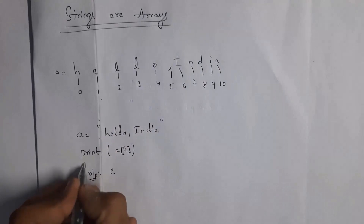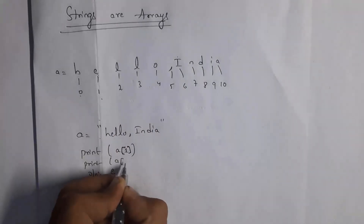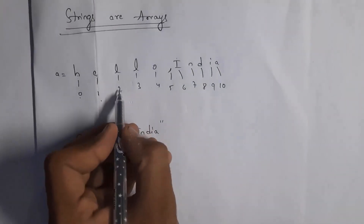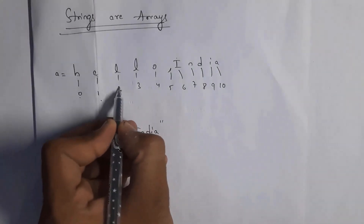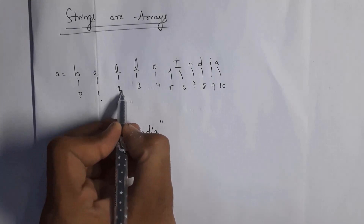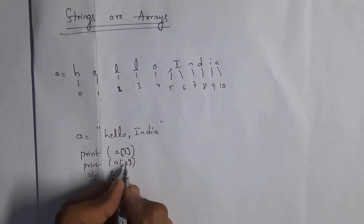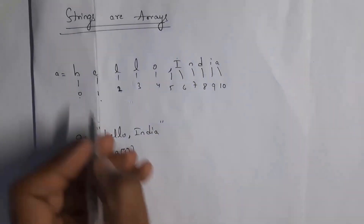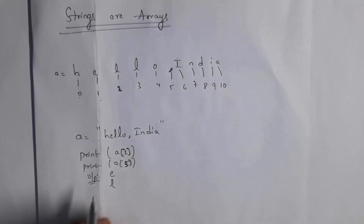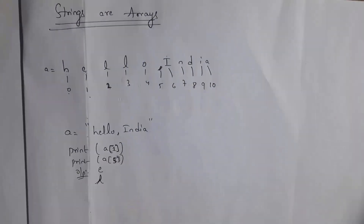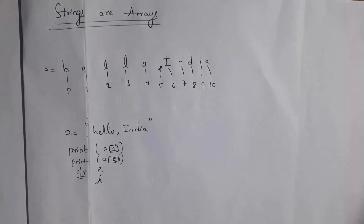For example, if you write print a[2], whatever character is at index number 2 will be generated as output — that is l. If you write index 5, index 5 contains comma, so you will get output comma. Strings are arrays because we can access each character present inside the string by giving an index number. We need to represent the index number inside square brackets, same as arrays.